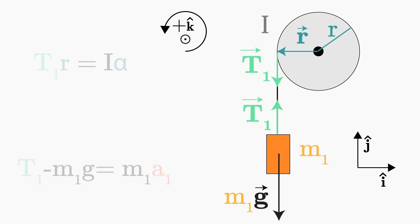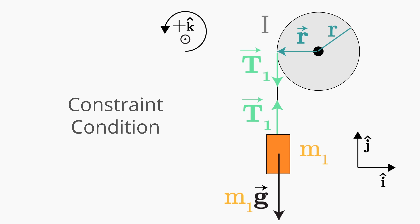Finally, we need to connect these two equations. Because the block is connected to the pulley using an ideal, taut, inextensible rope, a1 is going to be related to alpha. We just need to figure out exactly how they're related. In other words, we need to write down the constraint condition.